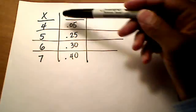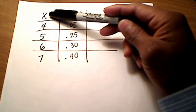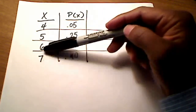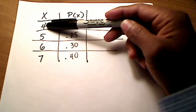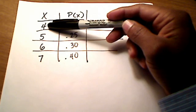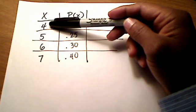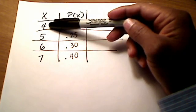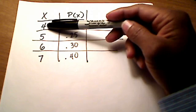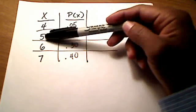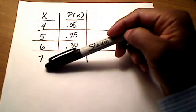X here is just going to represent a random variable. In this case, the random variables are 4, 5, 6, and 7. These are considered discrete because if you graph them on a number line, they would just look like a solid dot. There's no decimal attached to it — no 4.398 or anything like that. These are integer values, so these are discrete random variables.